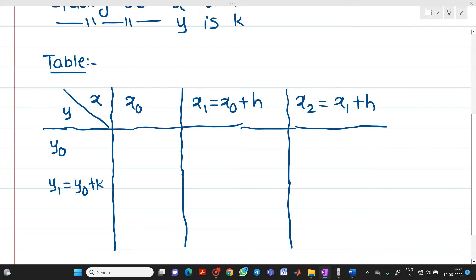Now we have a function f of x comma y. So thing is that how to find out this value? So it should be f of substitute here x equal to x0, substitute here y equal to y0 value. So you will get f of x0 comma y0. This value will be f of x equal to x1 comma y0. This value will be f of x equal to x2, y equal to y0.